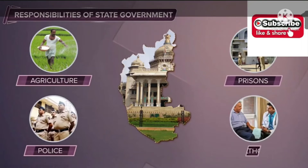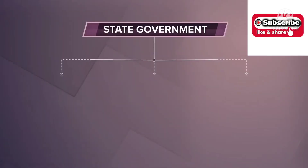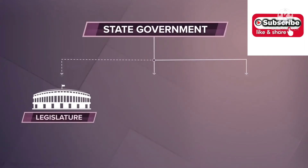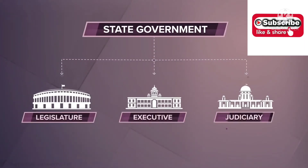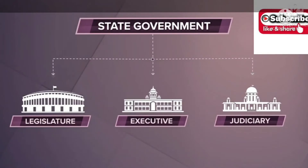Our constitution has laid down a uniform system of administration in all states. The state governments have a similar government structure to the Union Government of India. The three organs of the state government are the legislature, the executive, and the judiciary.